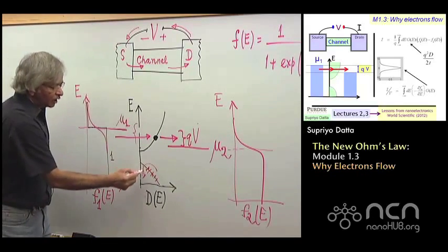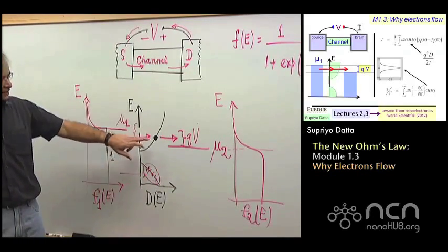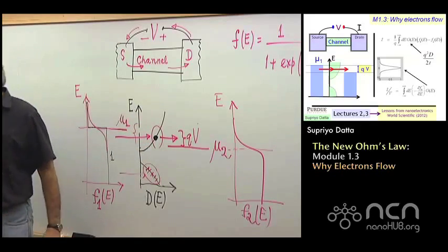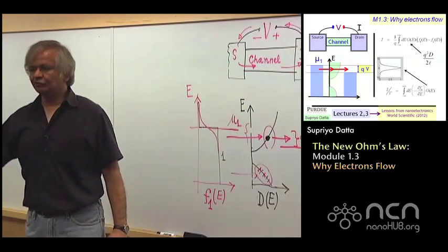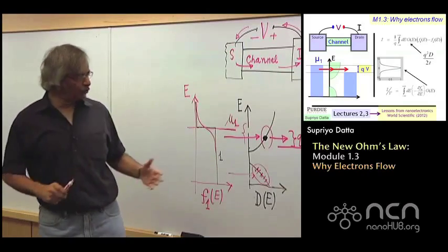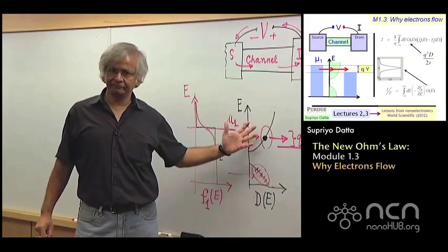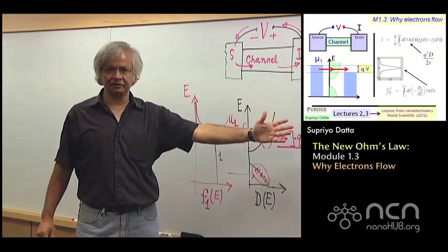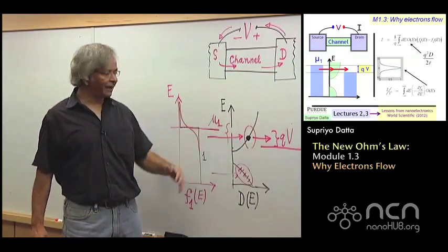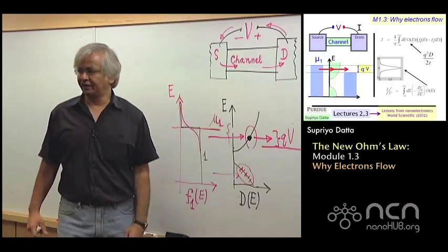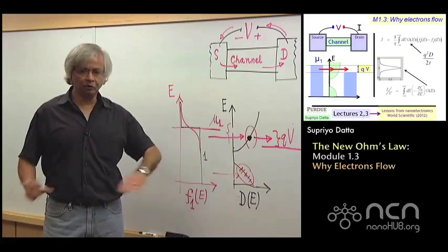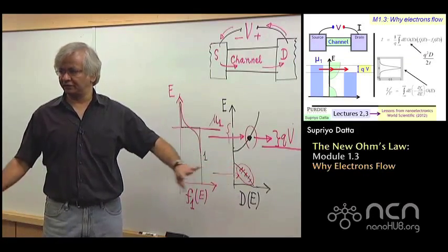And so, there is really no current flow here. Whereas, the reason you have current flow around these energies is because the two contacts have two different agendas. One wants to fill it up, one wants to empty it, and there's really no single way that both can be happy about this. And so, one just keeps filling it up, the other keeps emptying it. And so, all the current flow takes place in this energy range, where the two Fermi functions are different, and as such, the two contacts have different agendas. Down here, both contacts have the same agenda. It just stays filled. Nothing more happens.